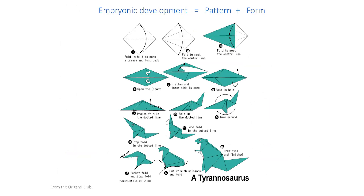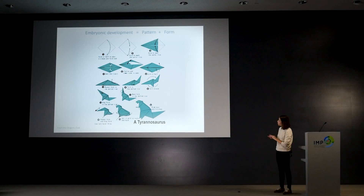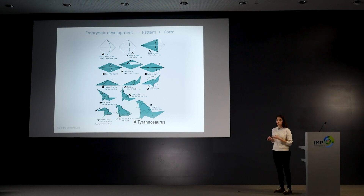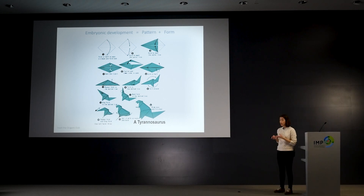This cartoon of how to fold a simple sheet of paper into an origami dinosaur really exemplifies many of the conceptual features of early embryonic development.